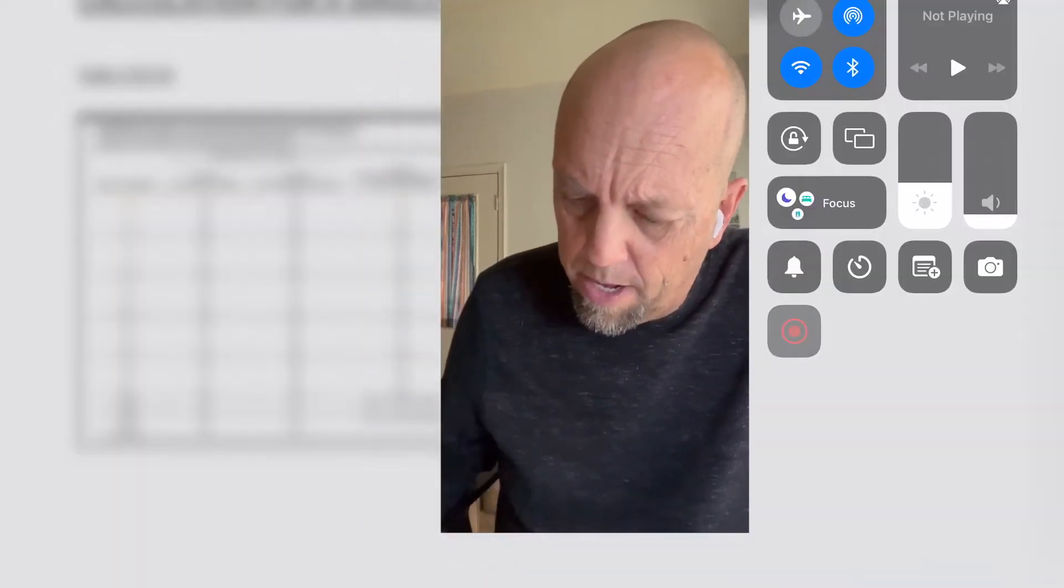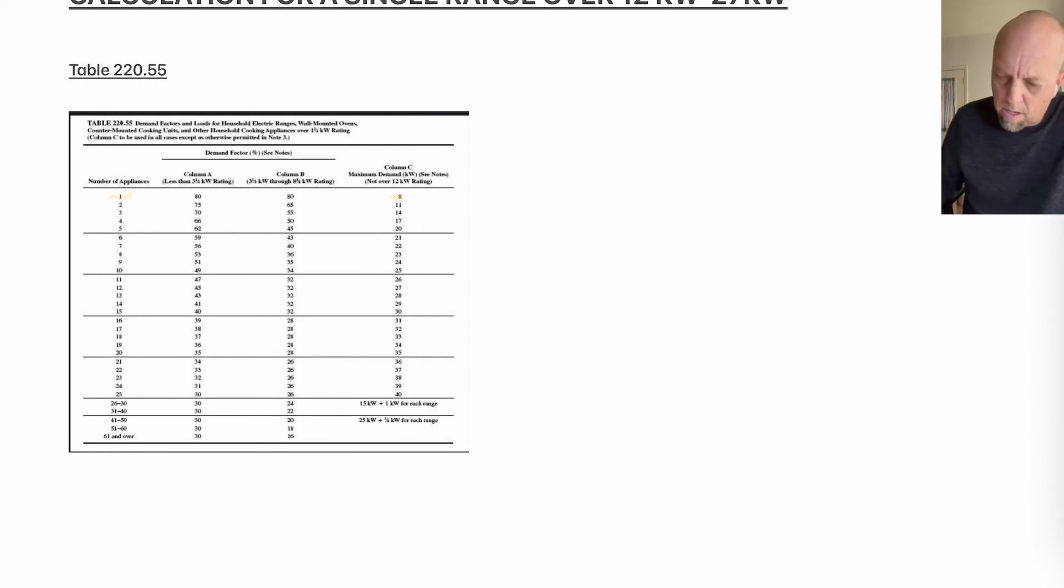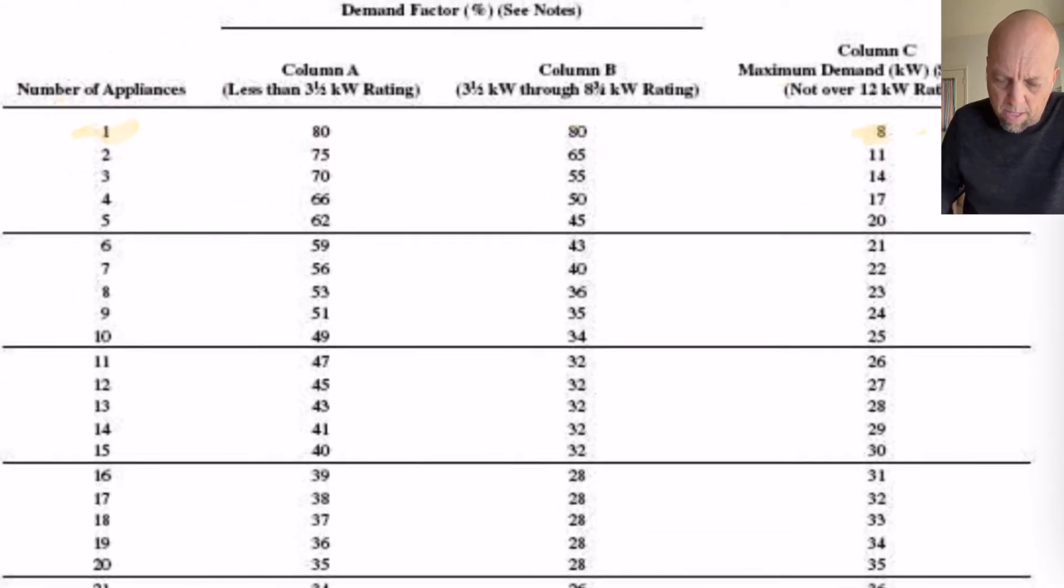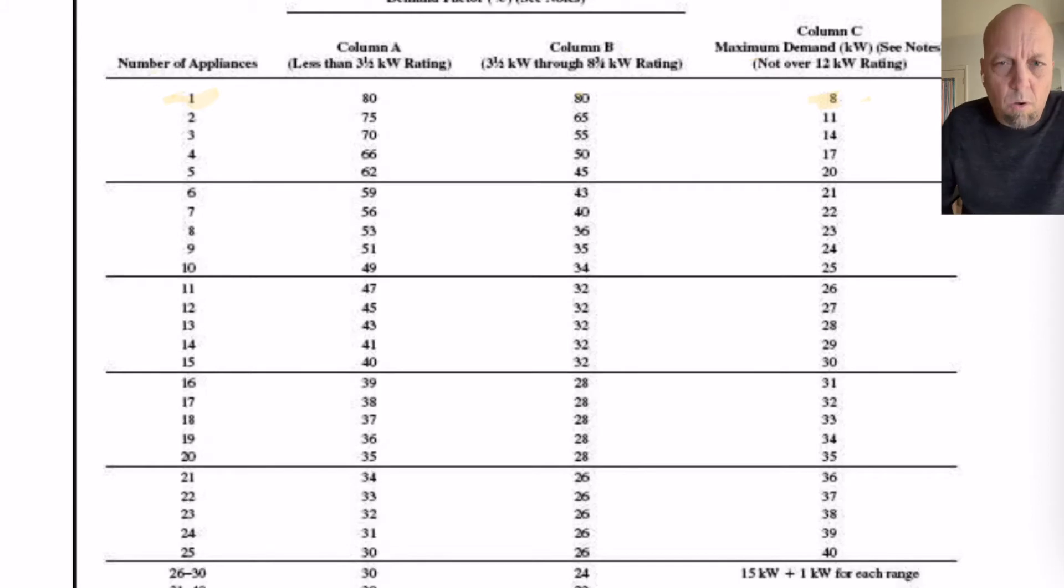So let me get you guys going on this. At table 220.55, let's look at that and on row one of the table, you'll see that it's for one appliance. And then all the way over to the right hand side in column C,